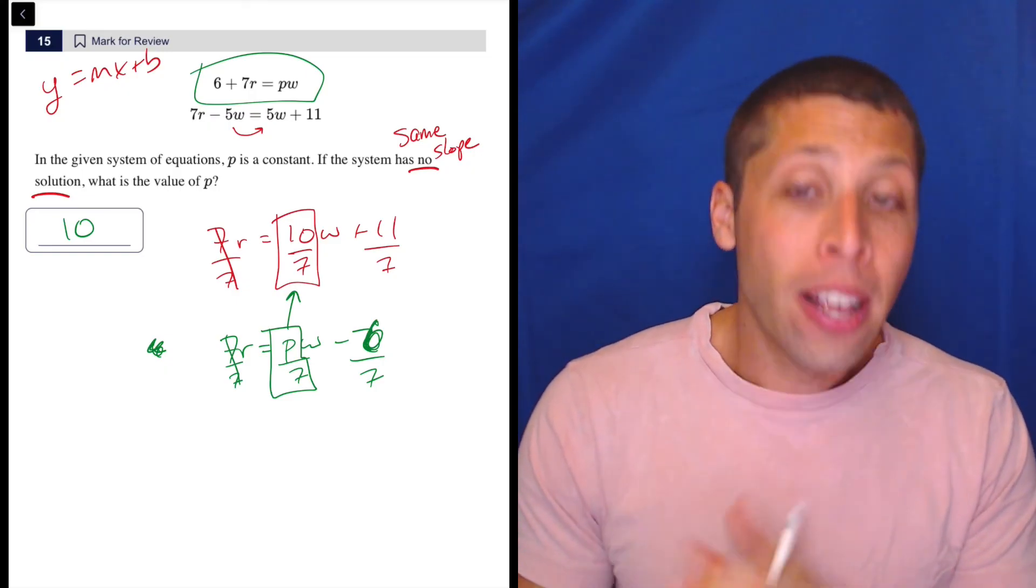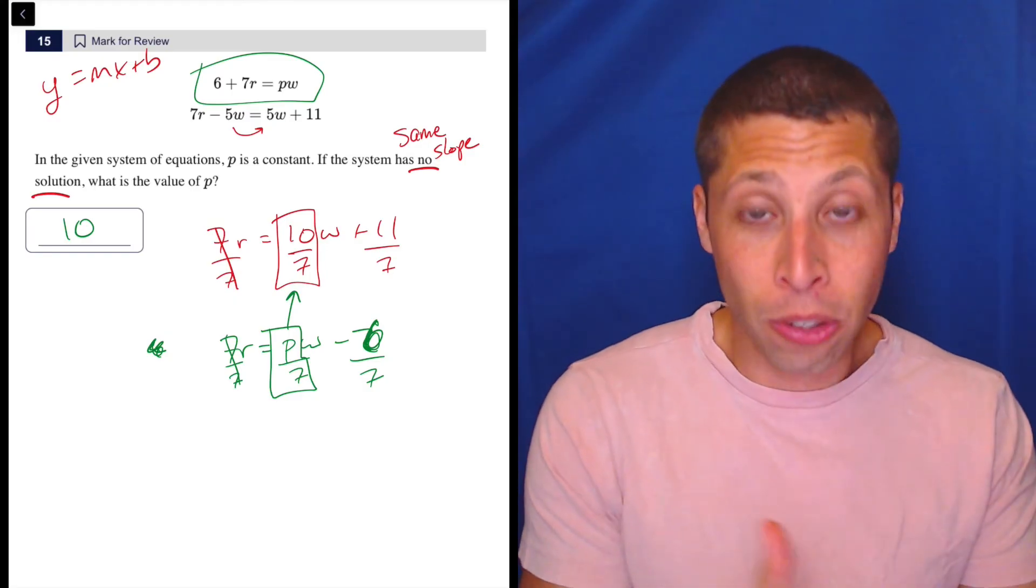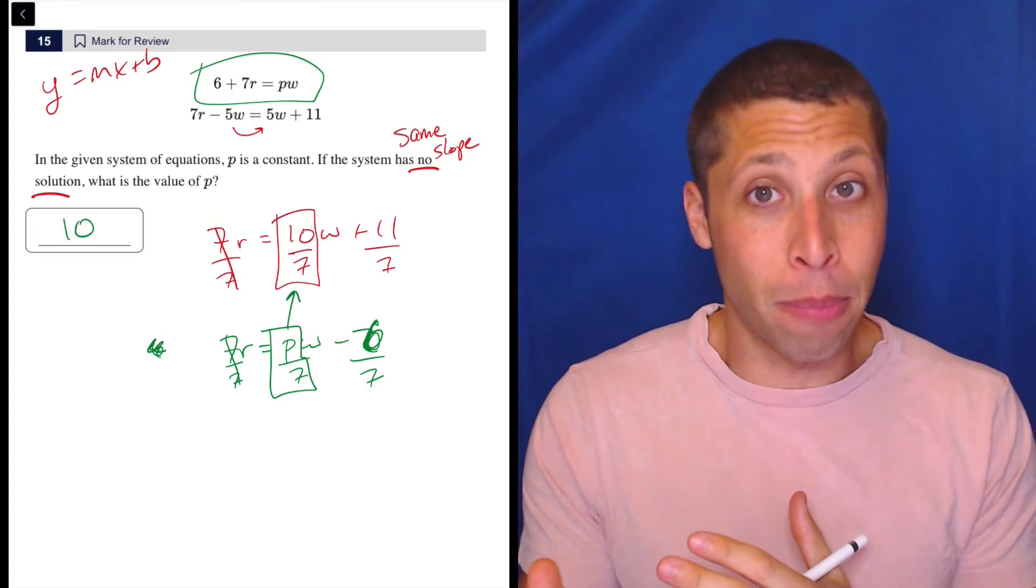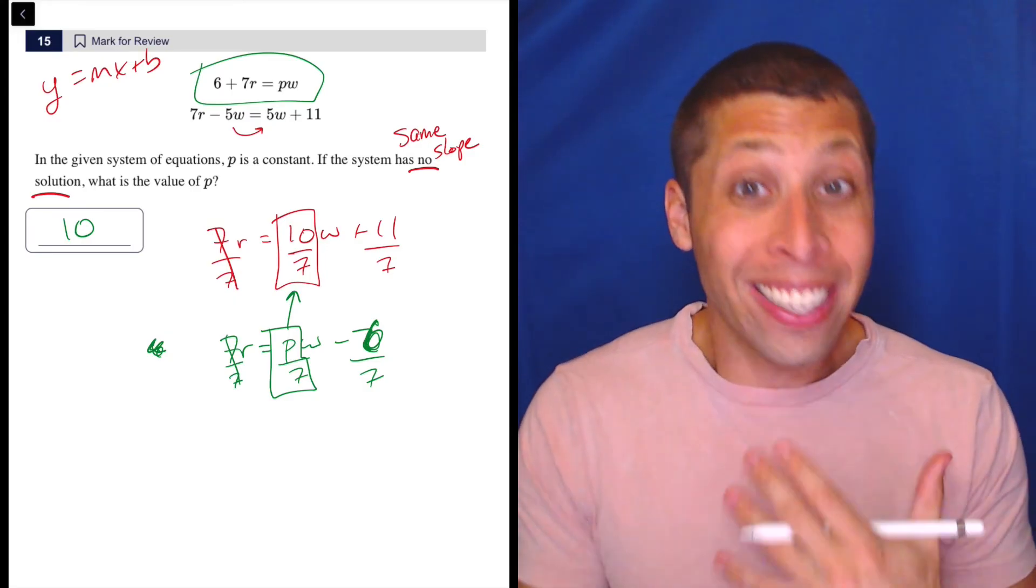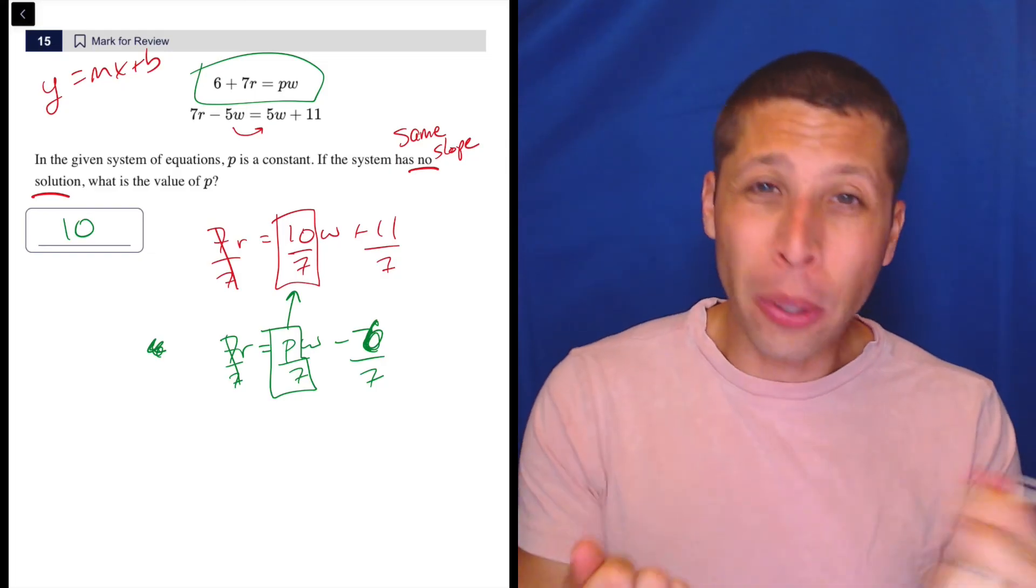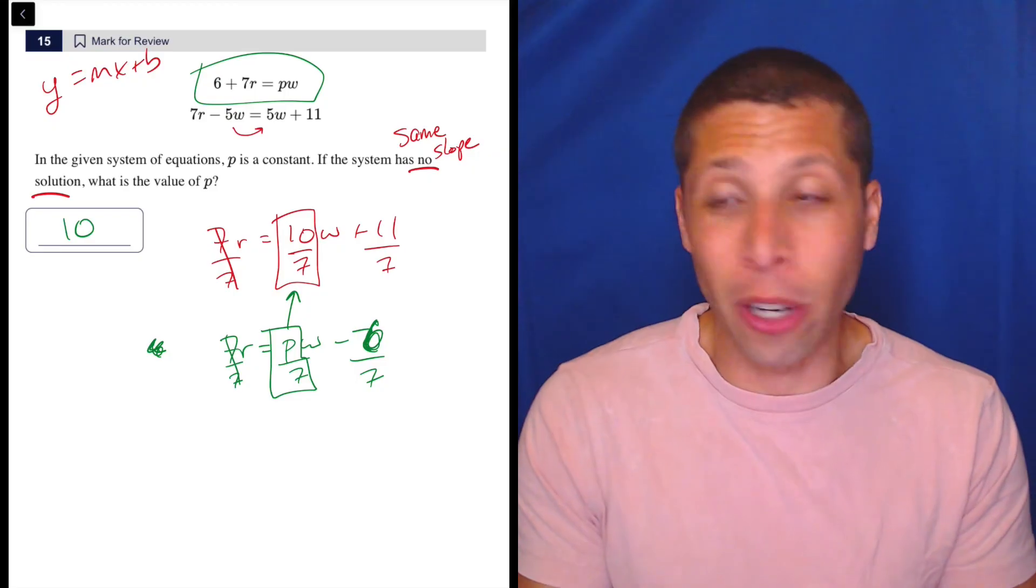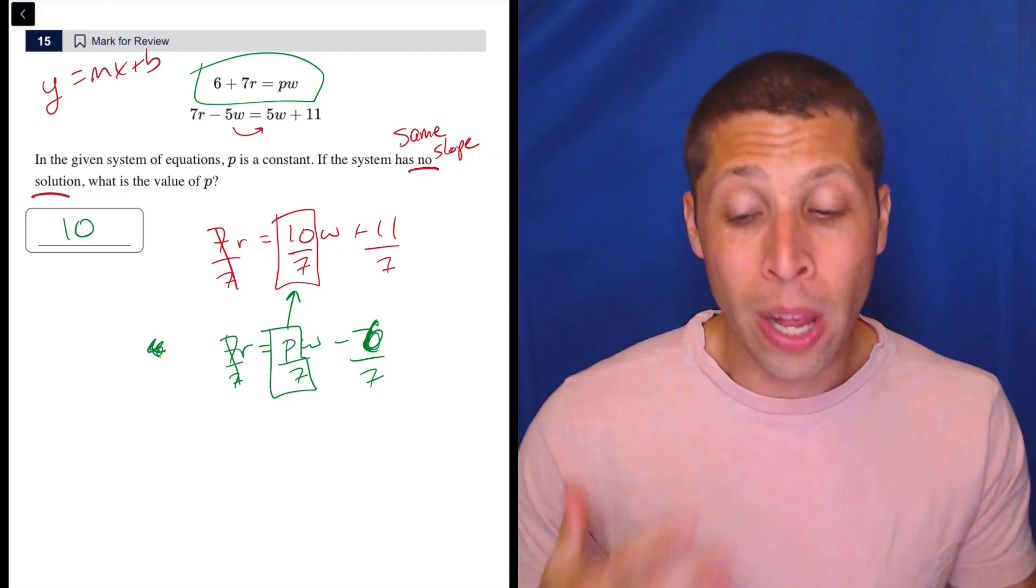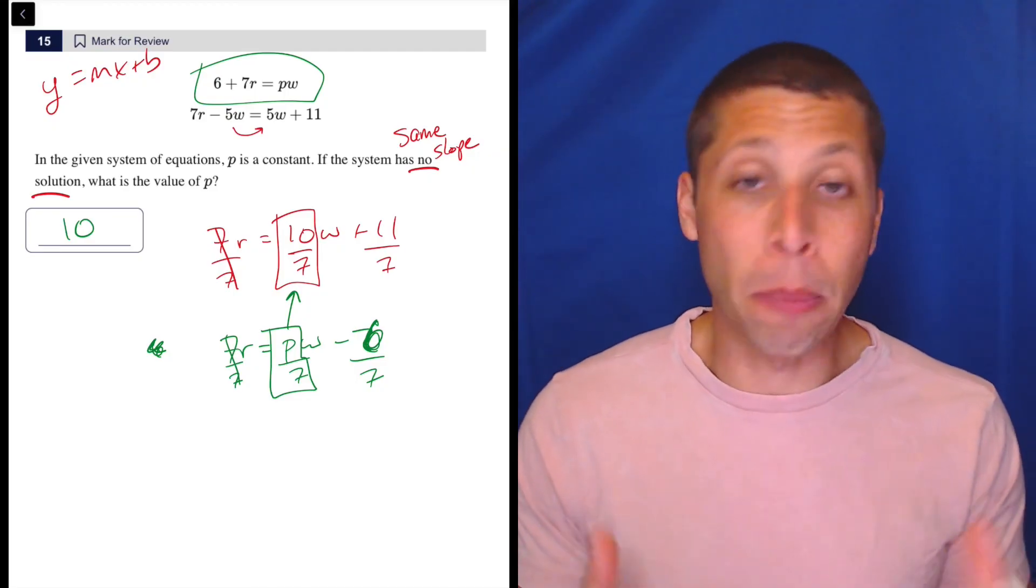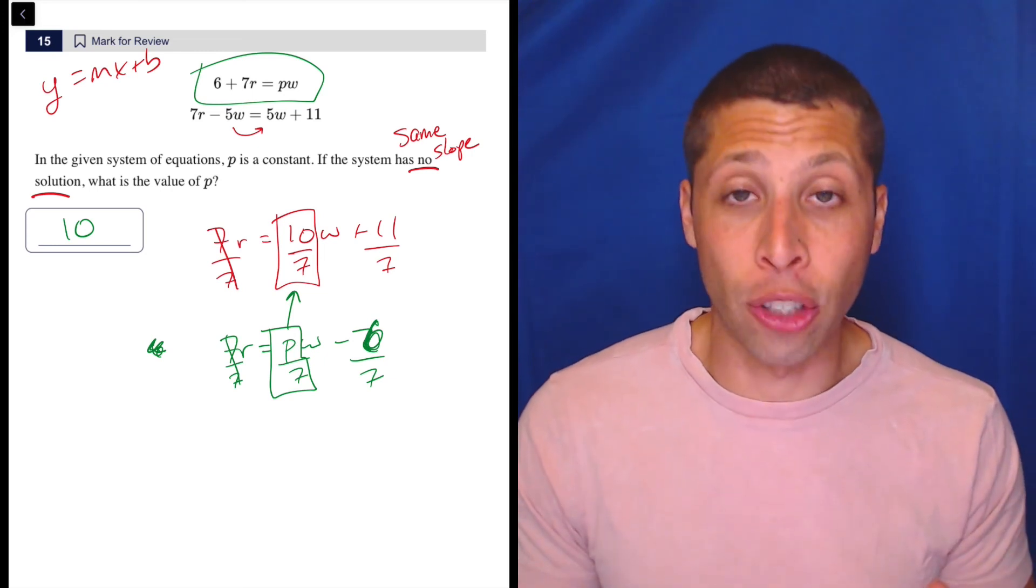I think that's safer than going to Desmos because in this case, 10 was the number, but what if the answer was 10 sevenths? Would you be able to put 10 sevenths in the slider and figure that out? No, I don't think so. Sevens are a very weird decimal, so you might never be able to get the answer you need playing with a slider and guessing and checking.